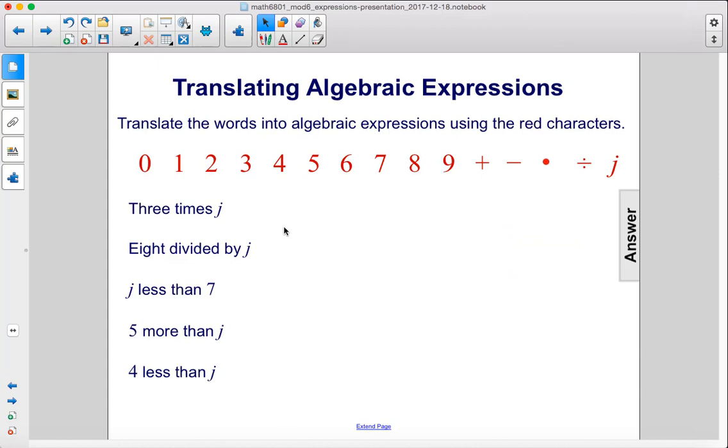Translate the words into algebraic expressions using the red characters. 3 times j, that will be 3j. 8 divided by j. j less than 7. Remember, when we see the word than, we reverse the order. So 7 minus j. 5 more than j, so j plus 5. And 4 less than j is j minus 4.